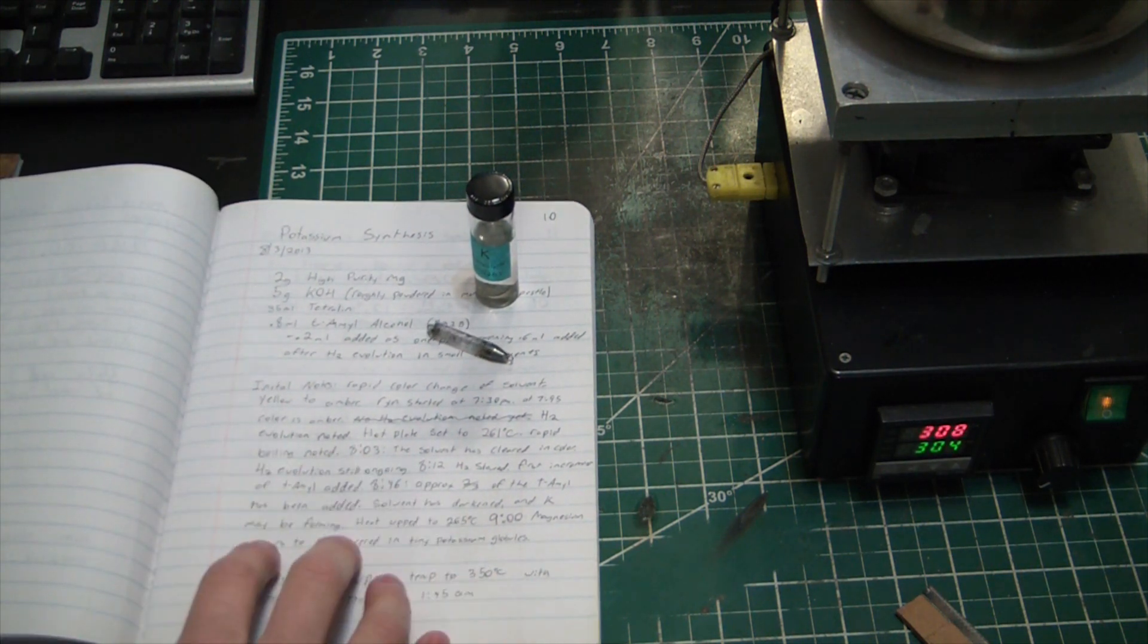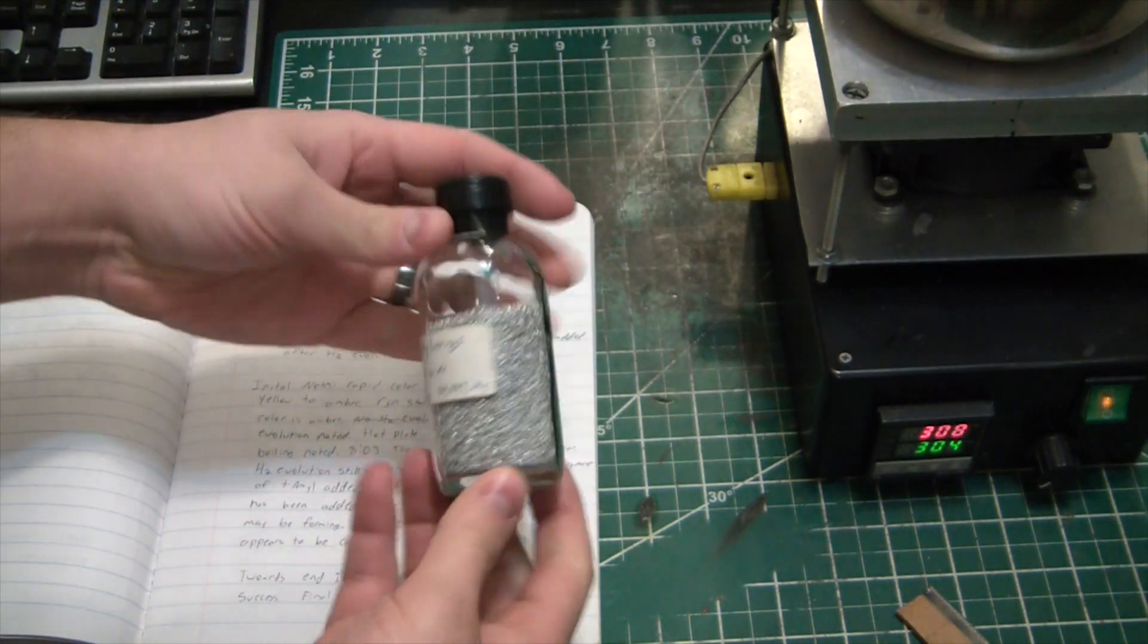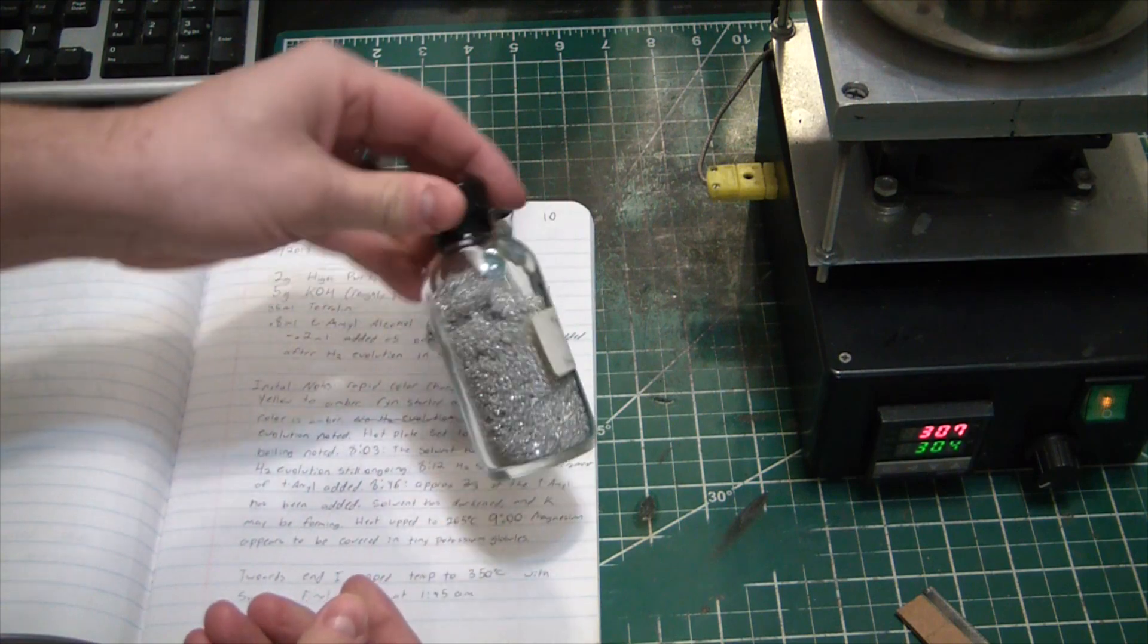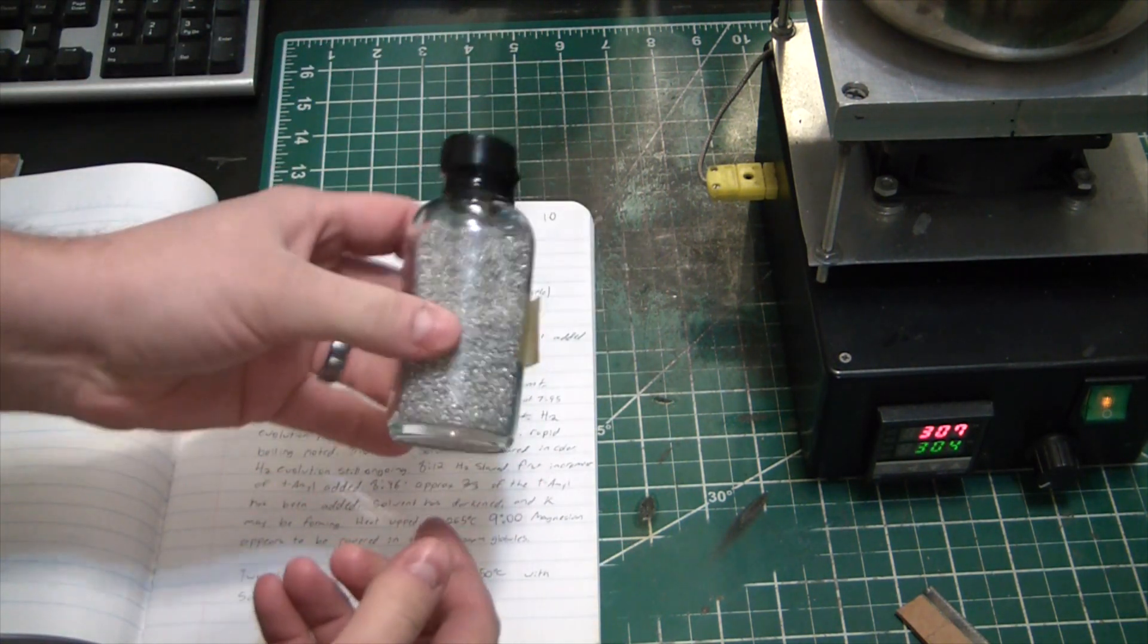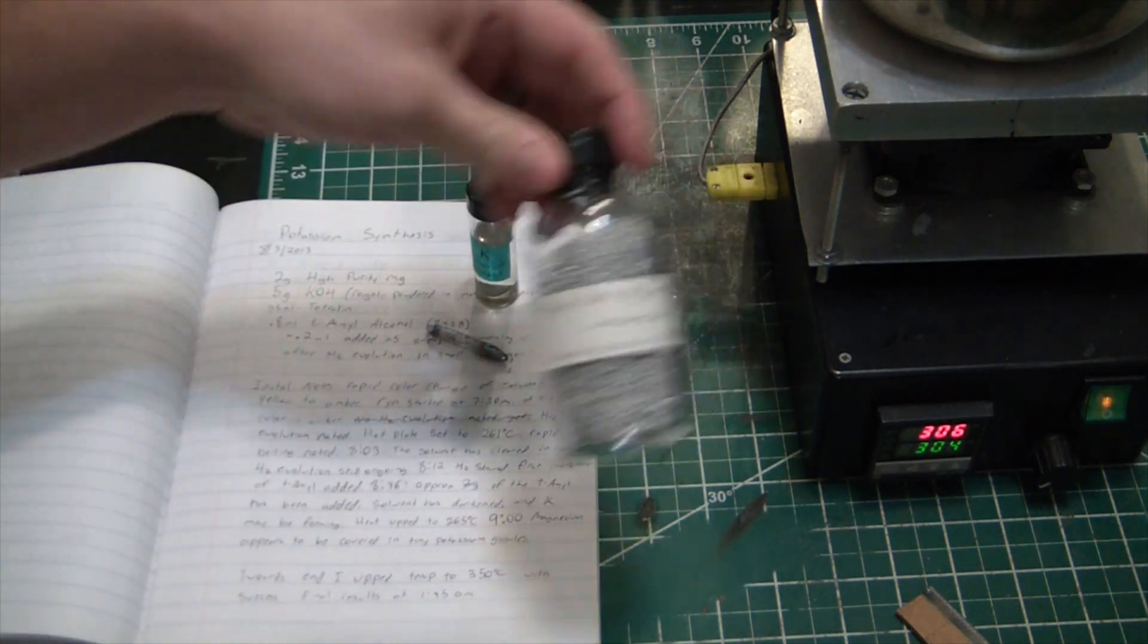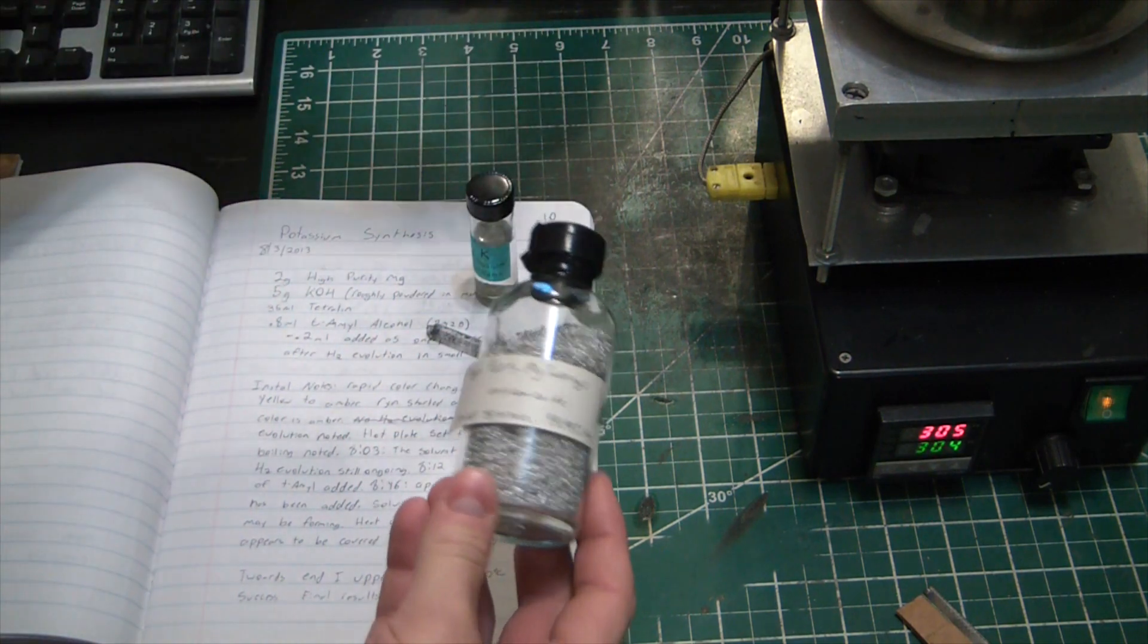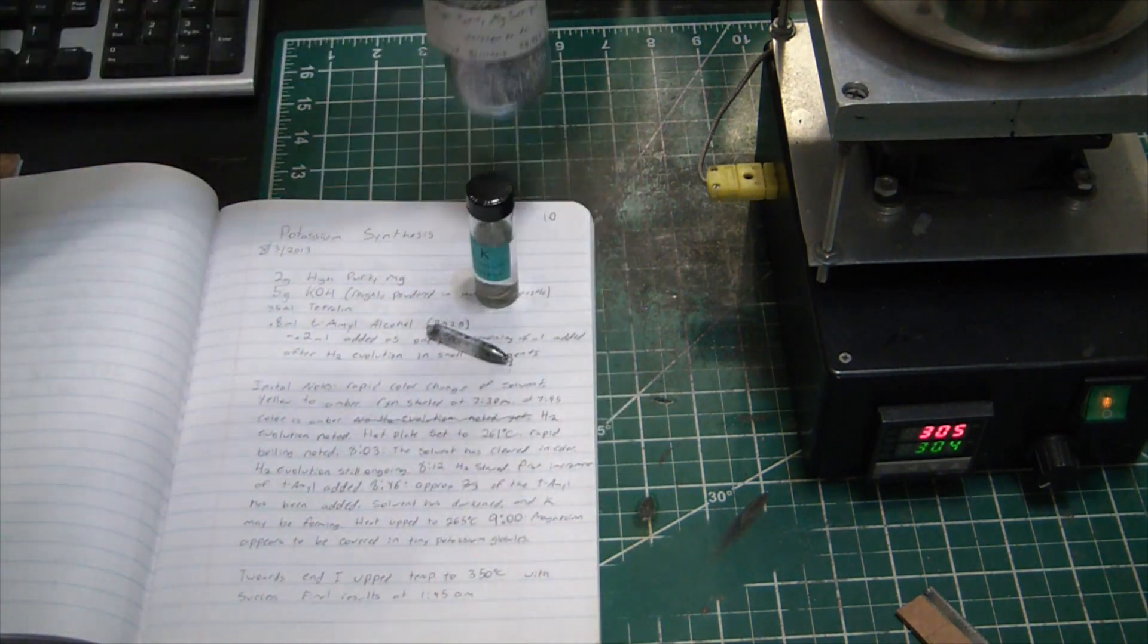So I was able to get a big block of high purity magnesium and I milled some turnings on my CNC mill and kept them under argon and sealed the bottle. So hopefully they're still good. Hopefully there's not too much oxides in there at this point. I did make them all the way back in 2013, so it might be a little old, but we'll see.